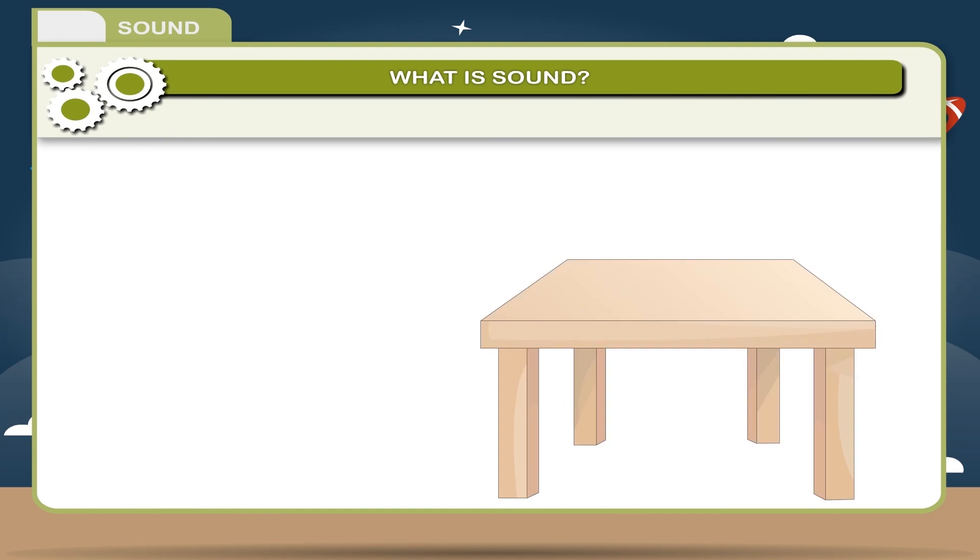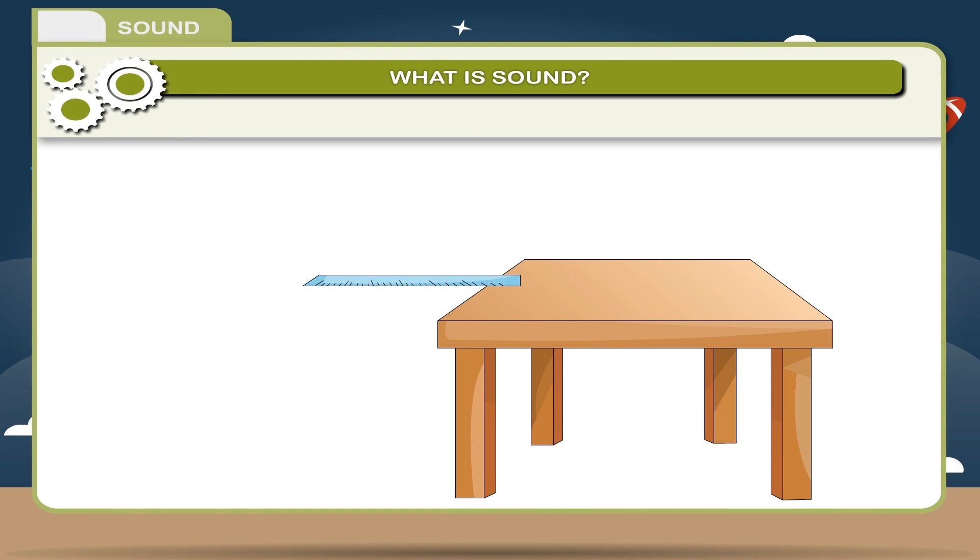Activity. Take a plastic scale and place it on a table so that some part of it projects out from the edge of the table. Place a heavy book on the other end of the ruler. Press the projecting end down with your finger and release it. What do you observe? You find that the ruler vibrates and produces sound.